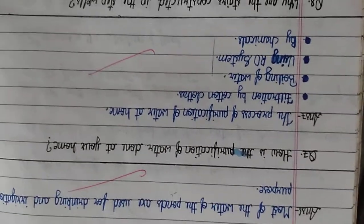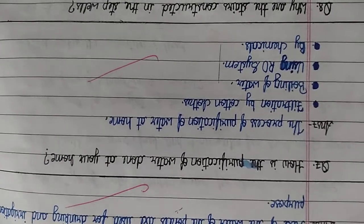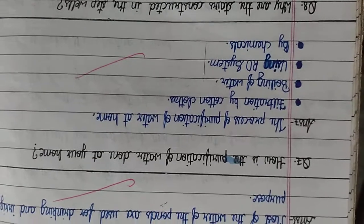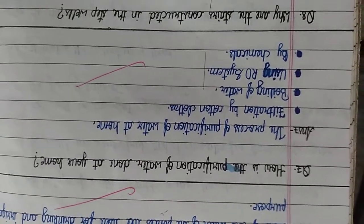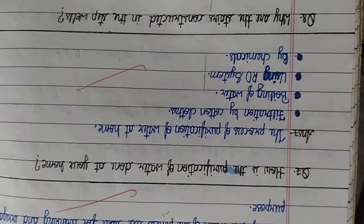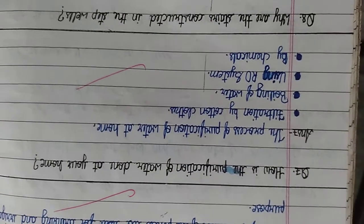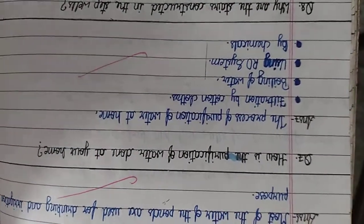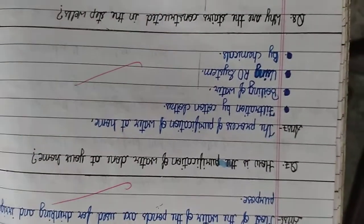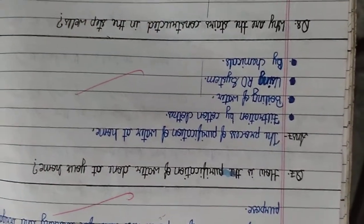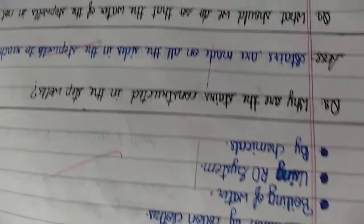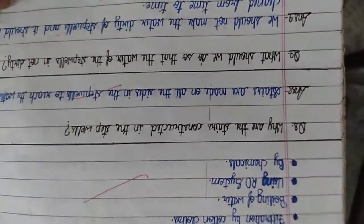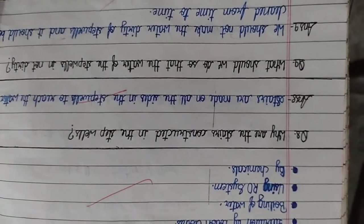How is the purification of water done at your home? Ghar par paani ko kaise saaf karenge? The process of purification of water at home includes: filtration by cotton cloth, boiling of water, using an RO system, and by chemicals. Cotton cloth se chhaan kar, paani ko boil karke, RO system se, aur chlorine ya potassium permanganate jaisi chemicals daalne se — saare germs aur bacteria mar jaate hain.